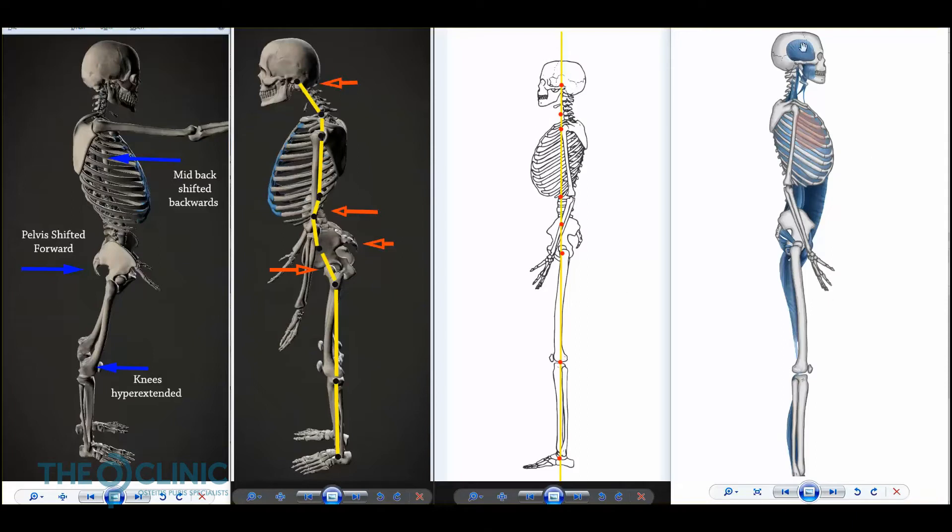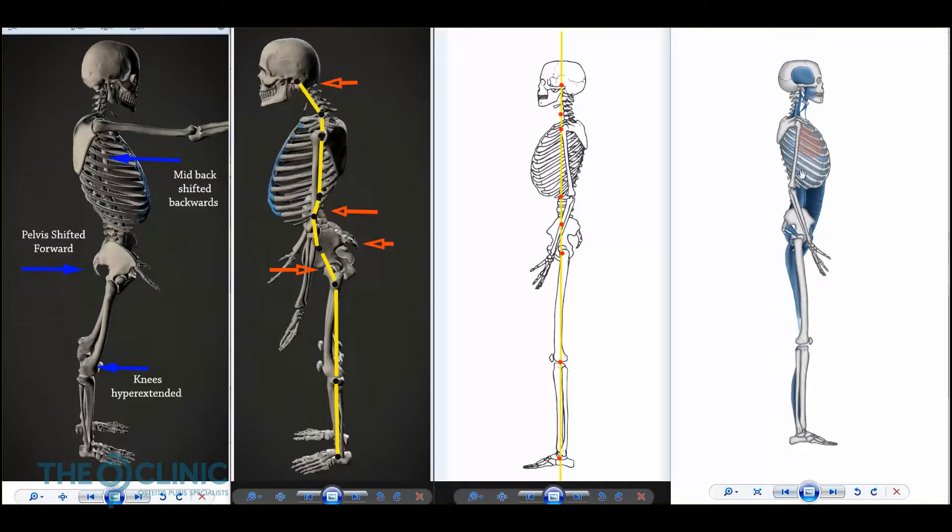And the DFL, it's the DFL's job, your deep front line, to keep that alignment. You can see that these muscles are going straight through the center of your body, so this fascial chain is going right through this central line, and that's what makes up your center of gravity. When your DFL engages, it pulls your joints back into your center of gravity.